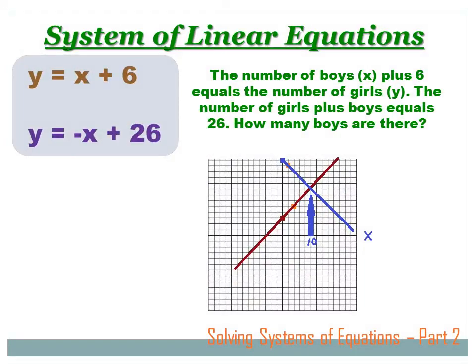Here's another interesting thing. If I were to take those two expressions — Y equals X plus 6 and Y equals minus X plus 26 — and change the format so that they're in slope-intercept format, I could plot those equations on a coordinate plane, create two lines. Here's one of the lines: Y equals X plus 6, and here's the other: Y equals minus X plus 26. Where those two lines cross is the solution we just came up with: X equals 10.